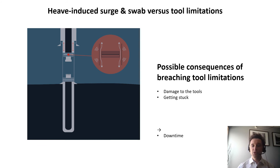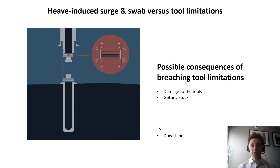Some tools such as packers or liner hangers have a limitation on how much flow is allowed in the annulus before something happens to them. This is most often specified by the equipment supplier, and most often there is some generic rig heave limit that comes with this. The possible consequences of breaching downhole tool limitations are damage to the tools, or getting stuck — which might happen if you pre-set the string by triggering the packer element too early. The ultimate consequence is downtime.